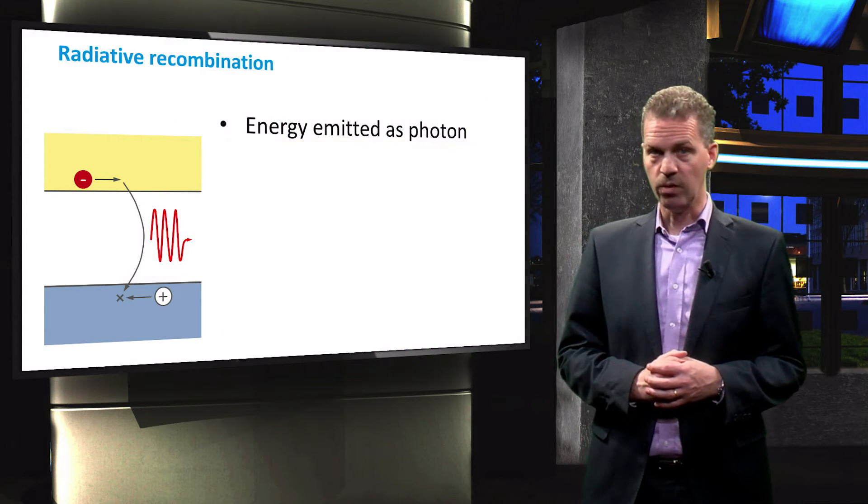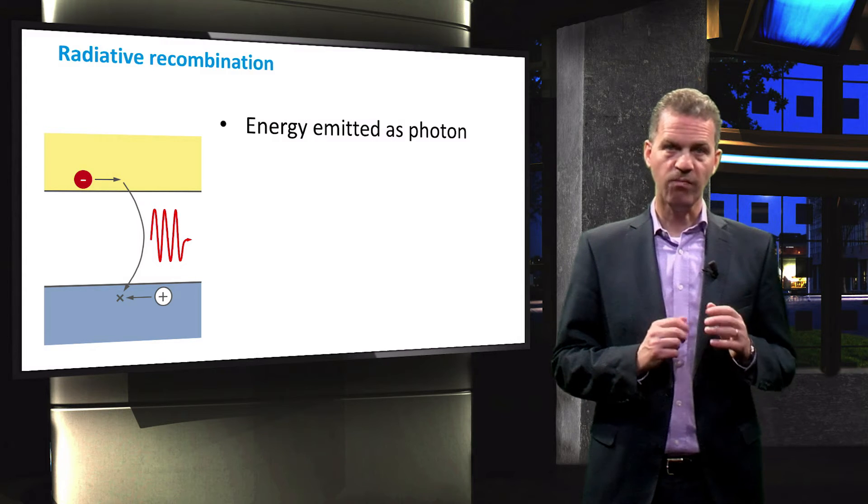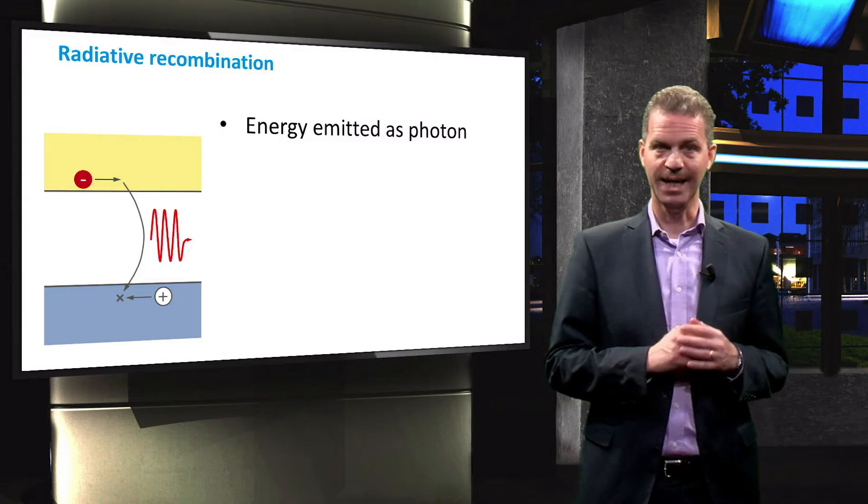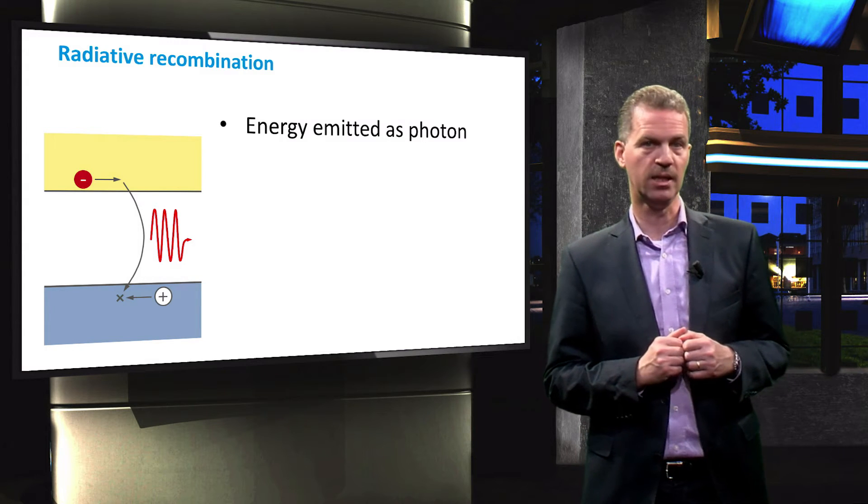In radiative recombination, the energy of the recombination process between an electron and a hole is emitted as a photon after recombination.